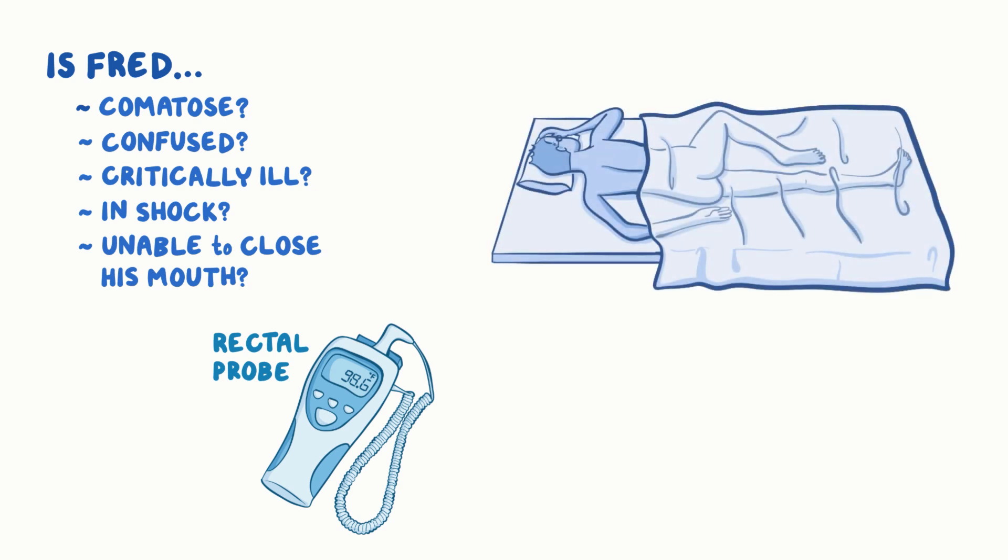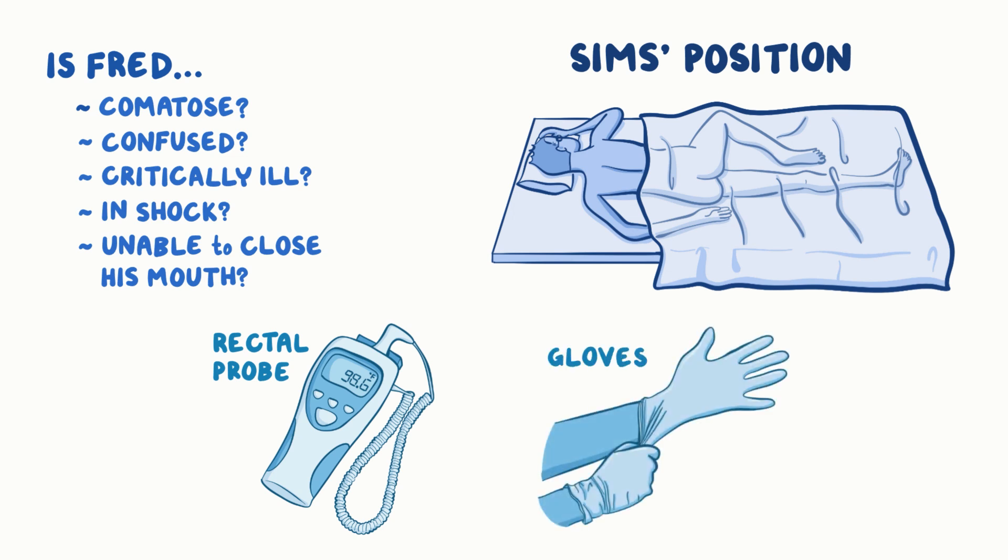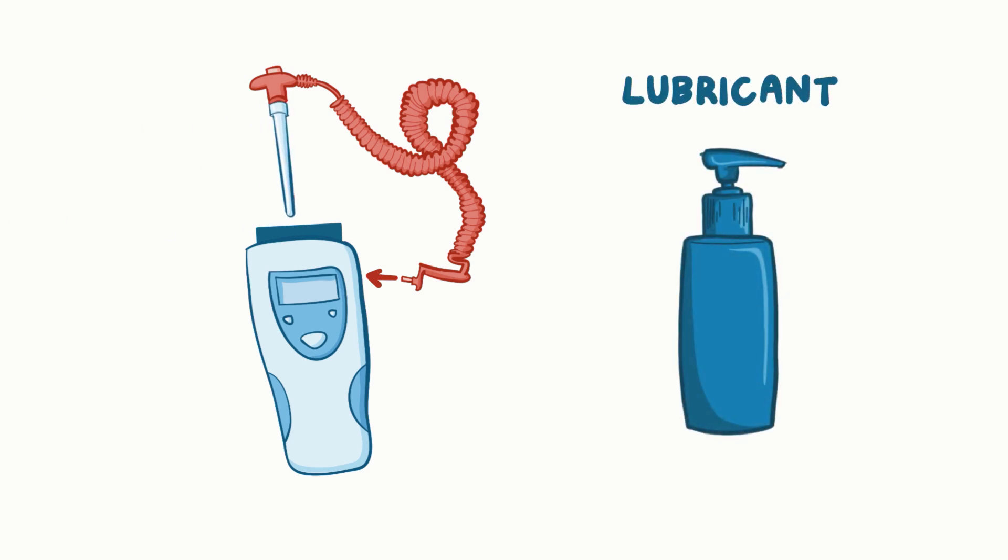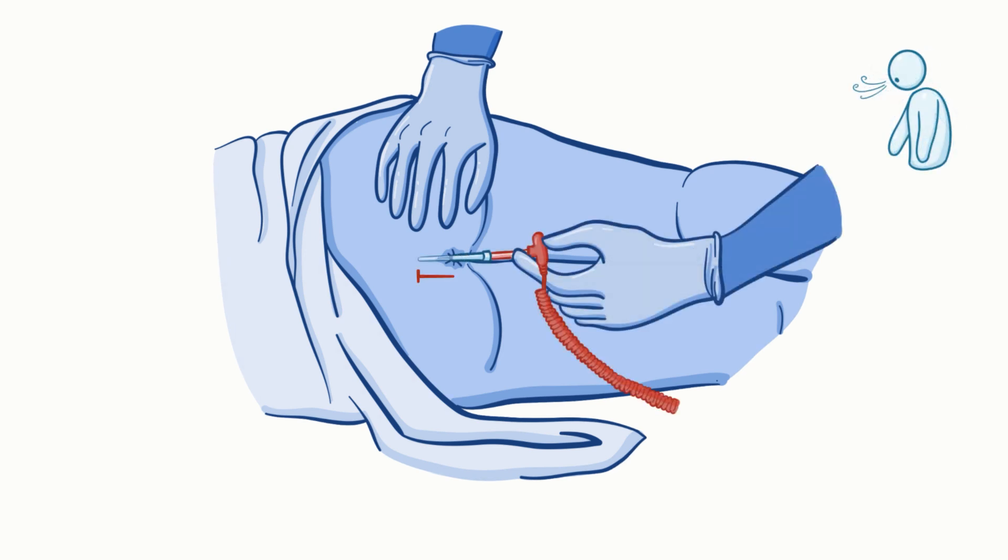Roll Fred over and into the sims position with the upper leg bent. Wear gloves. Attach the red rectal probe stem to the thermometer. Slide over a disposable probe stem cover and apply plenty of lubricant. With one hand, separate Fred's buttocks. Ask Fred to breathe slowly. Now insert the lubricated probe about three centimeters just over an inch deep into the direction of the umbilicus.